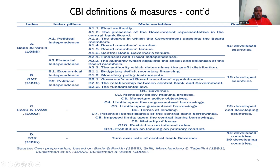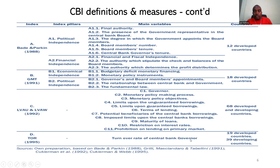Among more recent measures is the Cukierman 1992 index, where key variables are: C1 government, C2 monetary policy-making process, C3 monetary policy, C4 limits upon unguaranteed borrowings, C5 limits upon guaranteed borrowings, and so on. The TOR 1995 index of central bank independence looks at the turnover rate of central bank governors.